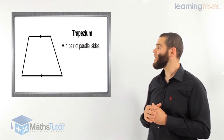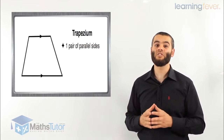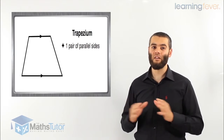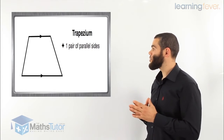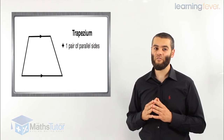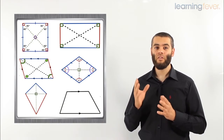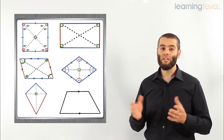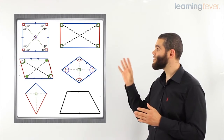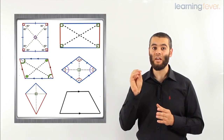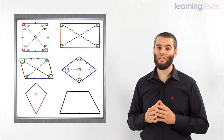Lastly, we have the trapezium. The trapezium is special because it only has one special feature: one pair of parallel lines. That's the only special property of the trapezium. So here are the six main quadrilaterals — the square, rectangle, parallelogram, rhombus, kite, and trapezium — and knowing their features will help us a lot with more complicated geometry questions in years 10, 11, and 12.